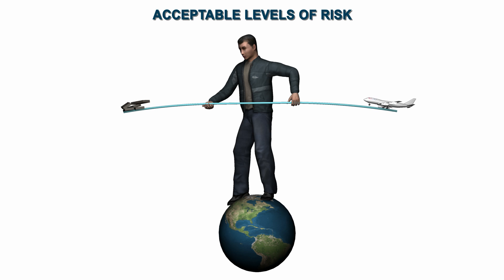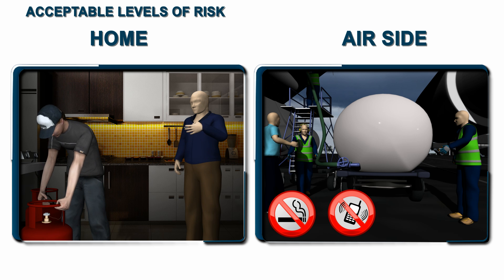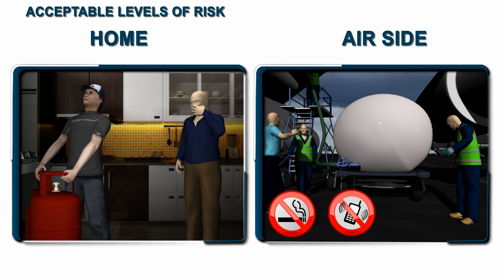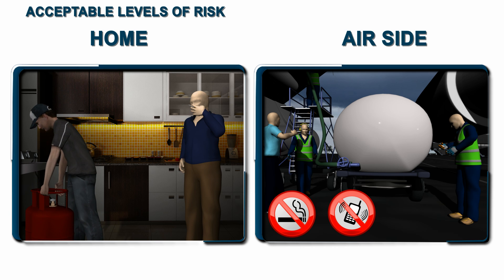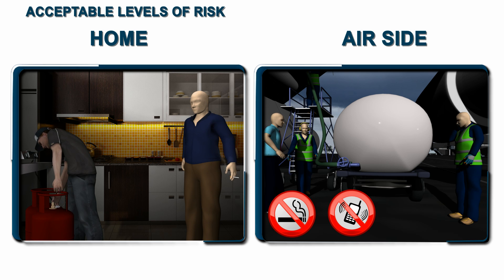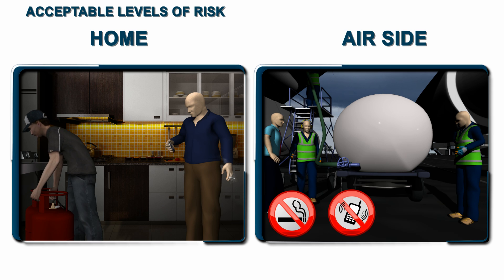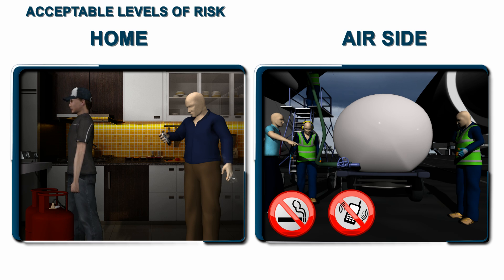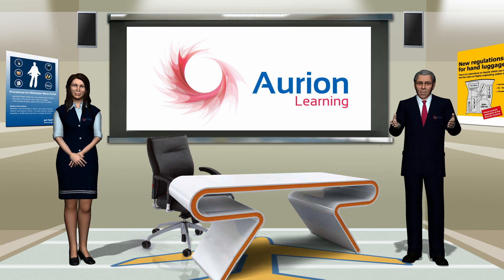That is the concept of acceptable level of risk. The easiest example of this would be changing a domestic gas cylinder. Fuel is potentially explosive, yet it is acceptable to have electrical appliances on at home during a cylinder change. However, such activities are not acceptable in an airside environment, even when refueling is not in progress.